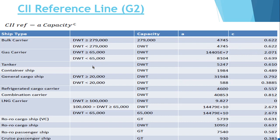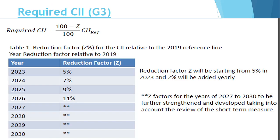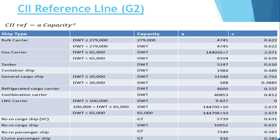Depending on vessel type and size, you use different A and C values. If the vessel's dead weight is more than 279,000, you use a fixed reference value instead of actual dead weight. But if your vessel's dead weight is less than that threshold, you take the actual dead weight of your vessel. Similarly for an LNG carrier — if your vessel is less than 65,000 DWT, take 65,000 instead of dead weight. The capacity A and C values are all given by the IMO table based on your ship type.